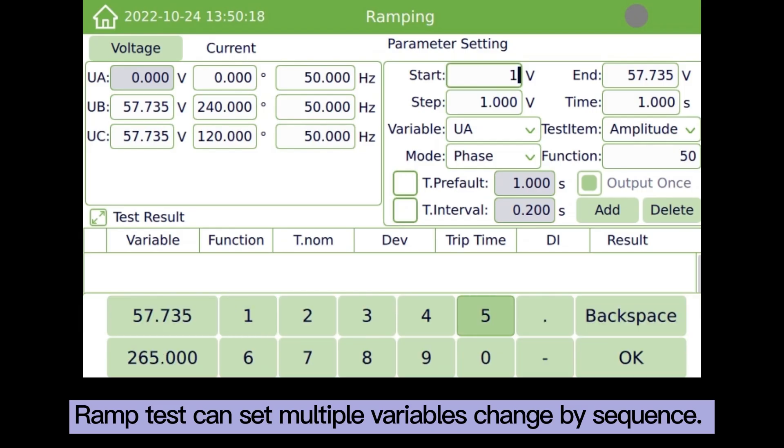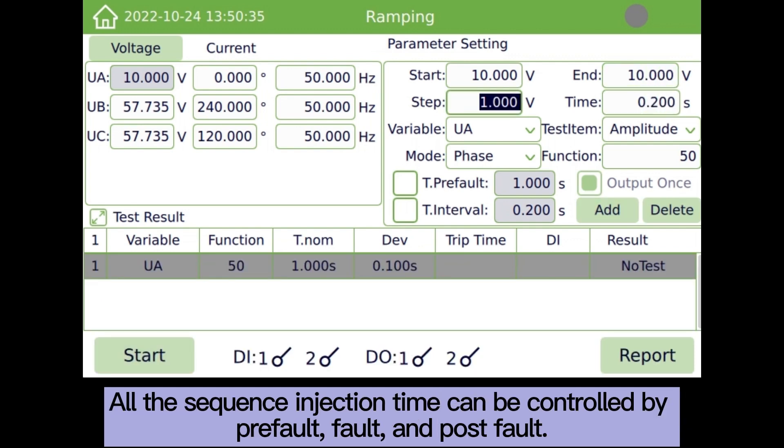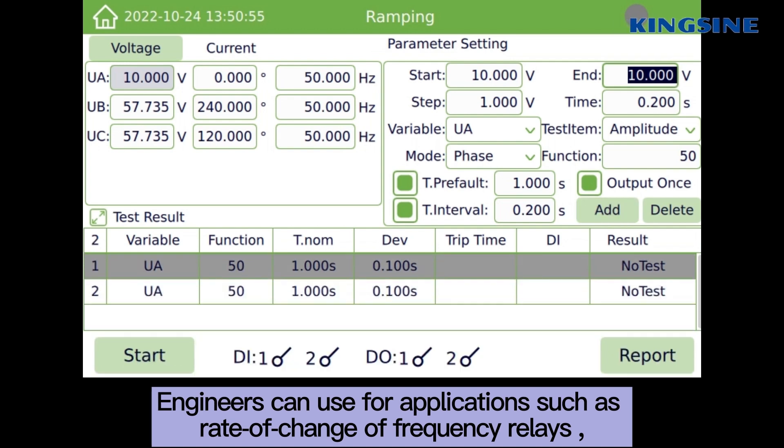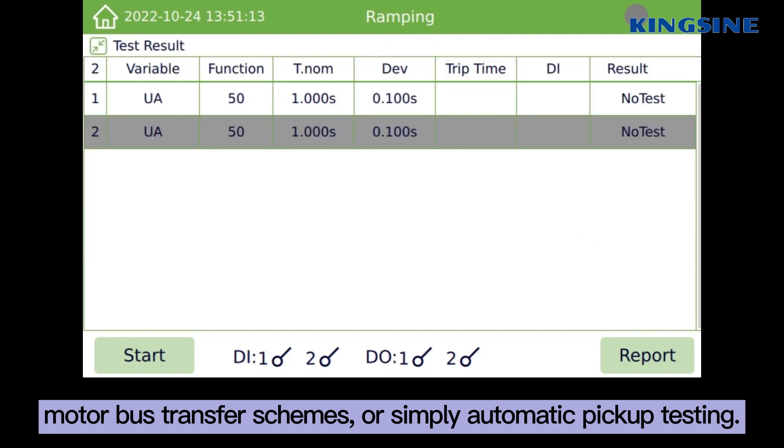RAM test can set multiple variables change by sequence. All the sequence injection time can be controlled by pre-fault, fault, and post-fault. Engineers can use for applications such as rate of change of frequency release, motor bus transfer schemes, or simply automatic pick-up testing.